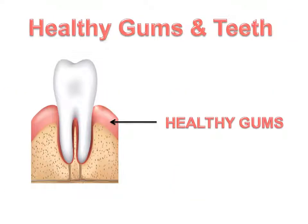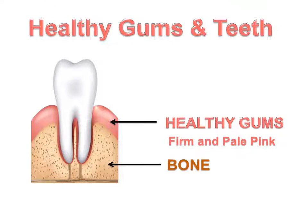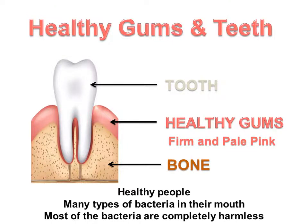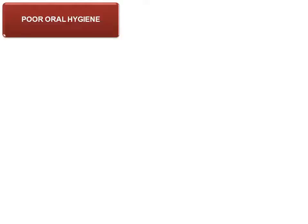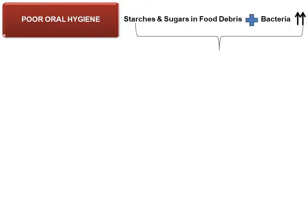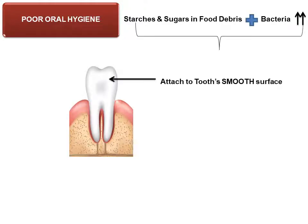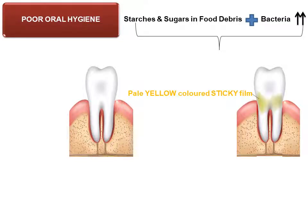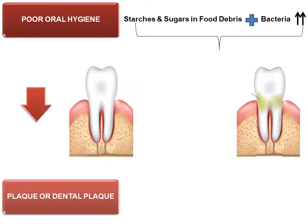Healthy gums are firm and pale pink. Healthy gums and bone hold the tooth firmly in place. Healthy people normally have many types of bacteria in their mouth, and most of them are completely harmless. When a person does not clean their teeth properly each day — that is poor oral hygiene — the starches and sugars in food debris help bacteria to multiply and attach to the tooth surface, forming a pale yellow sticky film called plaque or dental plaque.